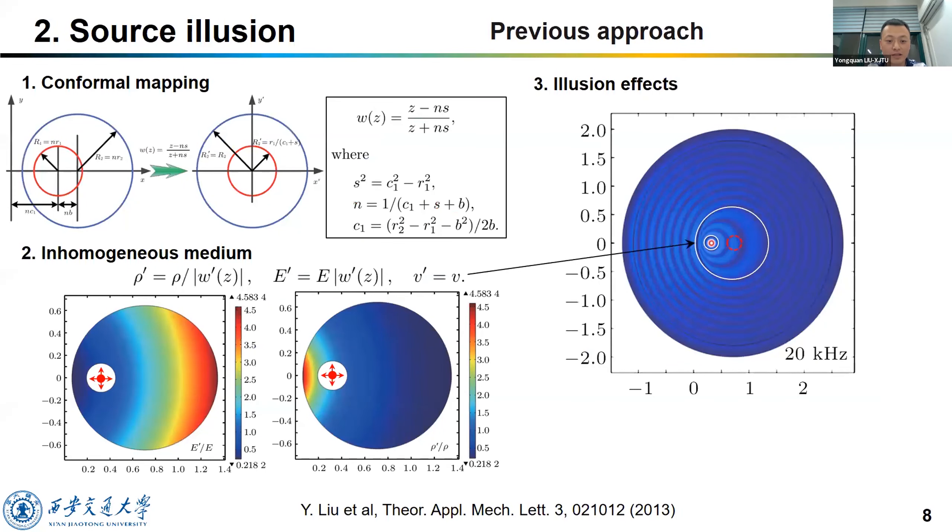For example, if there is a source here, namely the red circle, and we want somebody to think that the source is in the center of the region. How can we achieve this? Previous approach is using the conformal mapping in a certain region. By doing this, we can get the needed material rho prime, E prime, and nu prime. If we let the region have these material properties exactly, the wave will be redirected as if the source is placed at the center.